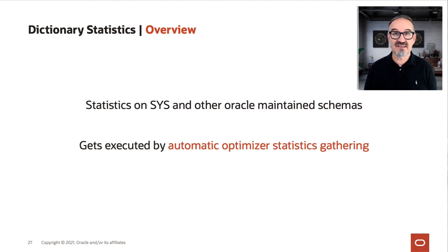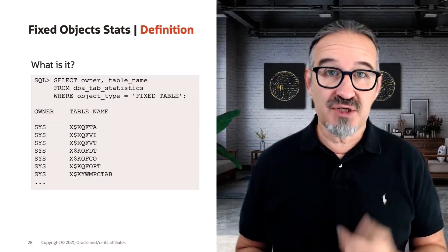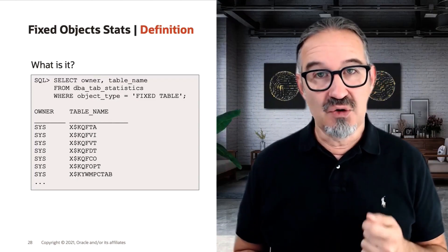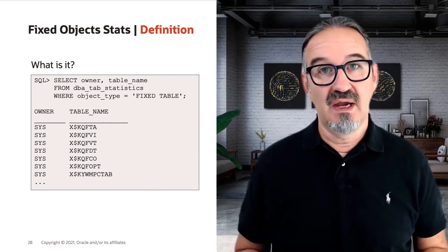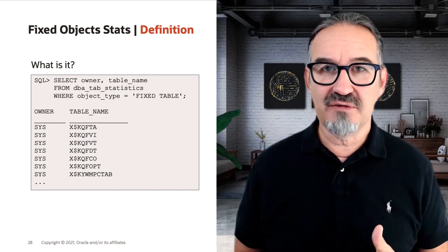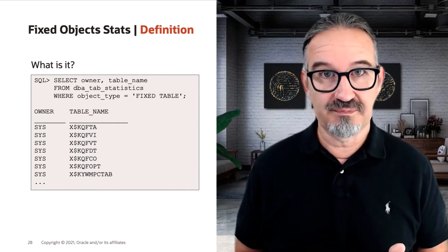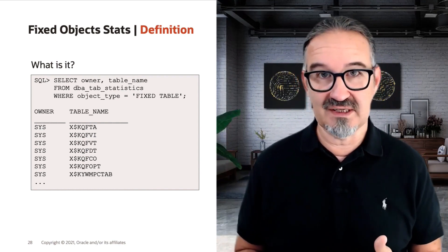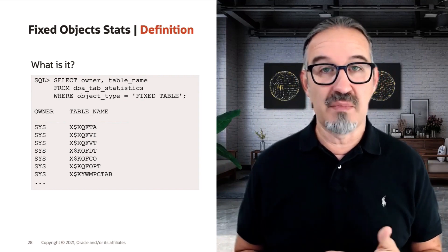When you have the automatic statistics job running in your databases — which is the default if you haven't turned it off — then your dictionary statistics get refreshed. Very important are also the fixed object statistics. Those are the stats on the X$ structures very deep down in the Oracle dictionary. Since Oracle Database 12.2.0.1, this is also part of the automatic stats gathering job. But you can check beforehand if you have current stats there, and if not, it's a good idea to refresh them yourself.